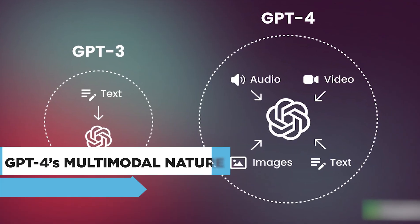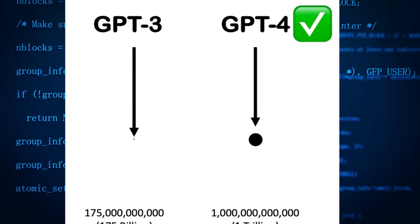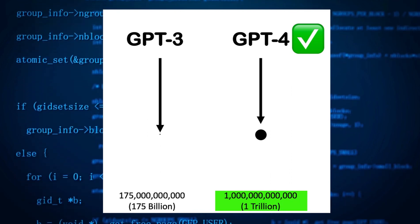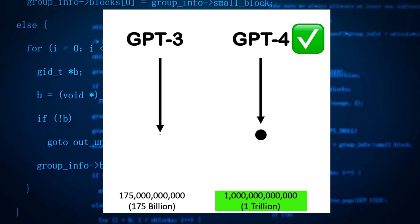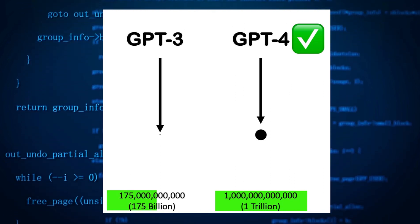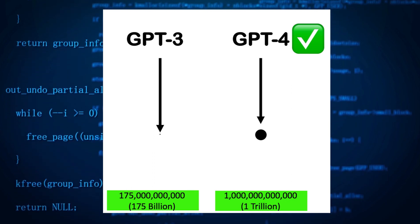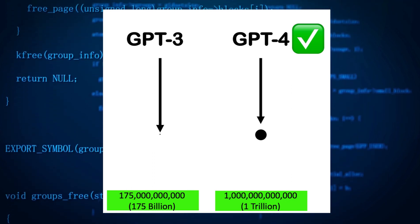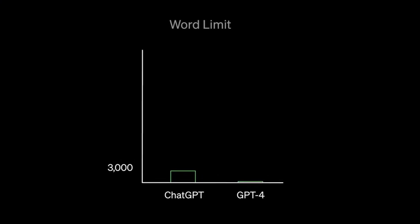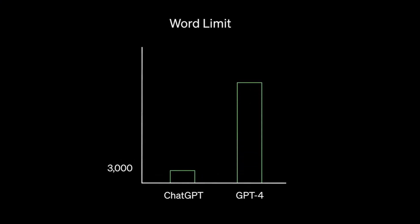GPT-4, which is currently available to users of ChatGPT+, accounts for over 1 trillion parameters, whereas GPT-3.5, used in ChatGPT, considers around 175 billion parameters depending on the prompts. GPT-4 was trained for 6 months, up to September 2021, on a large context of 25,000 words.